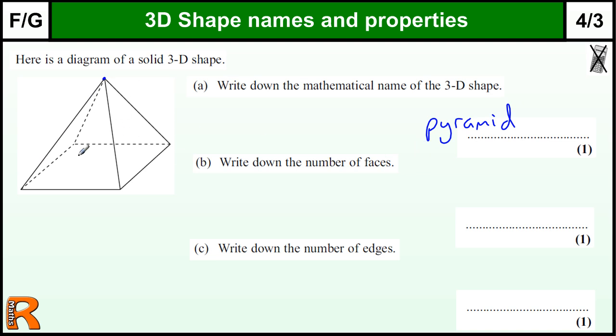The only other possibility is you could actually make this more technically correct by calling it a square-based pyramid, because there are lots of different types of pyramid. But you will get one mark for pyramid. Square-based is technically correct because it's got a square on the bottom.